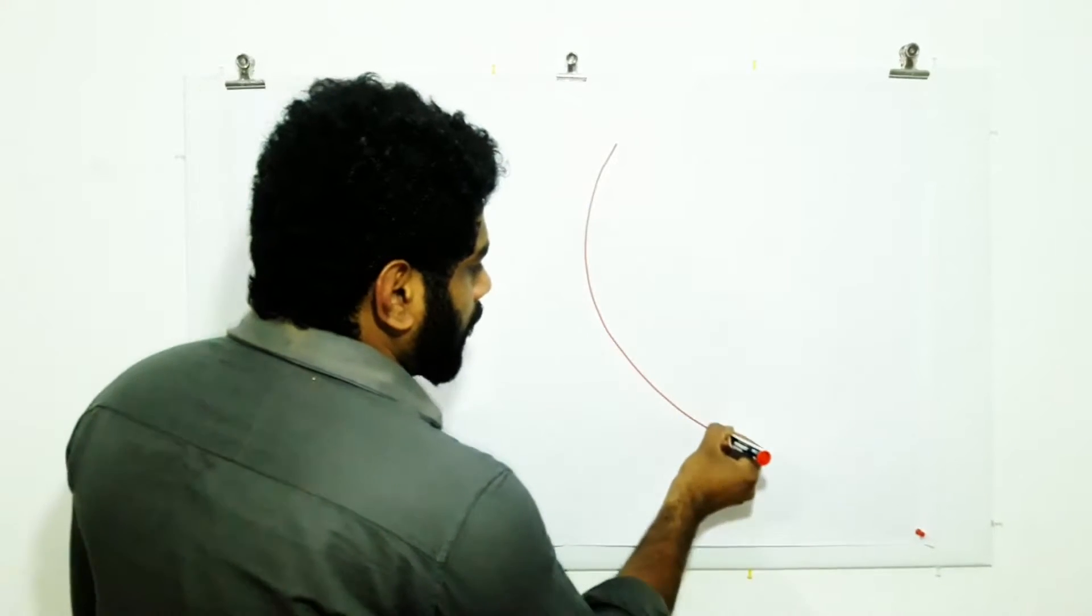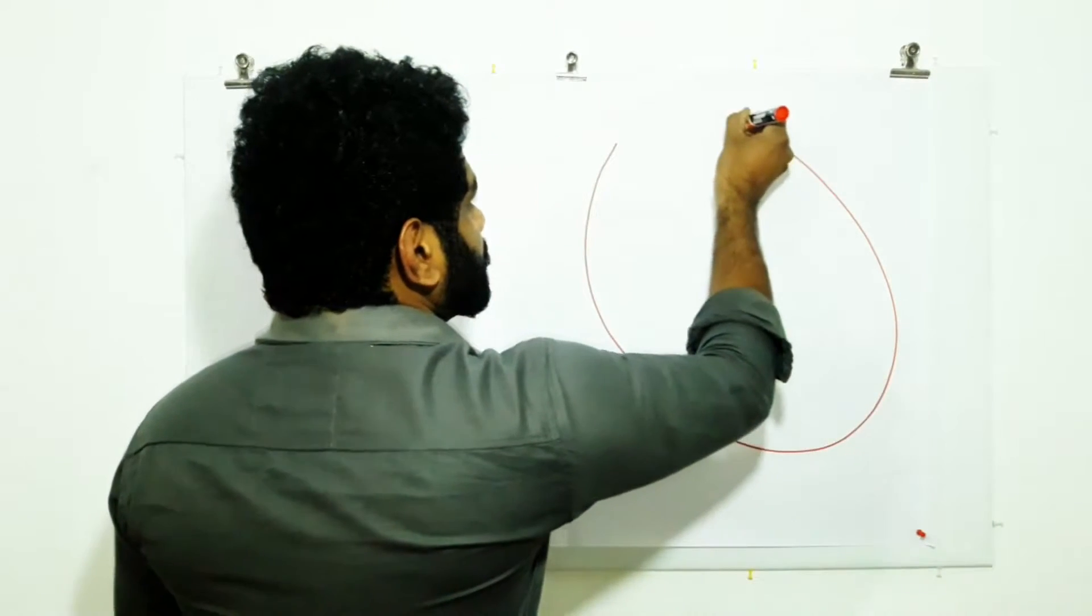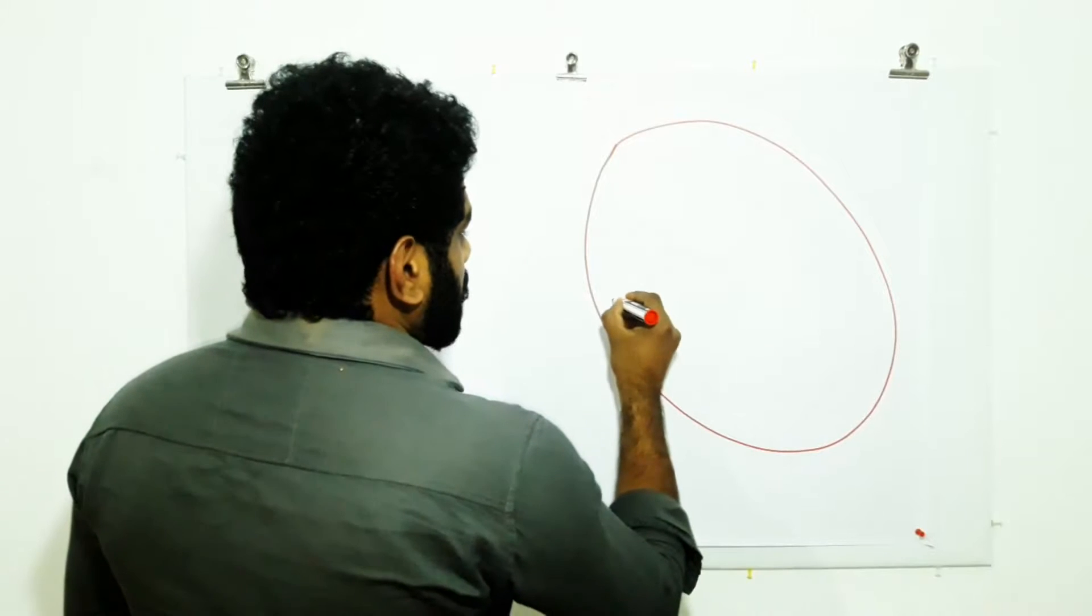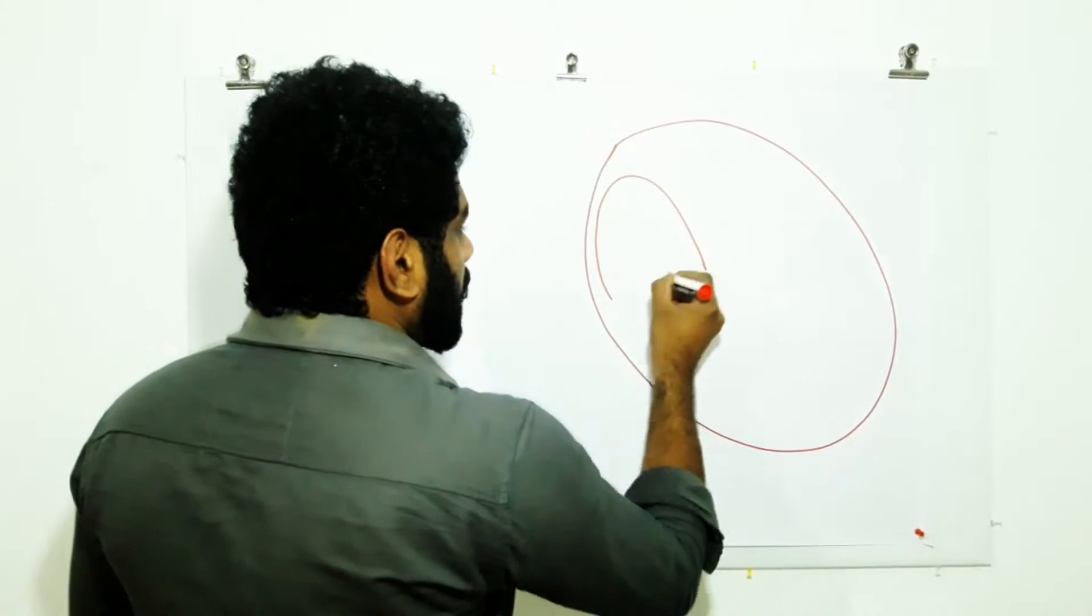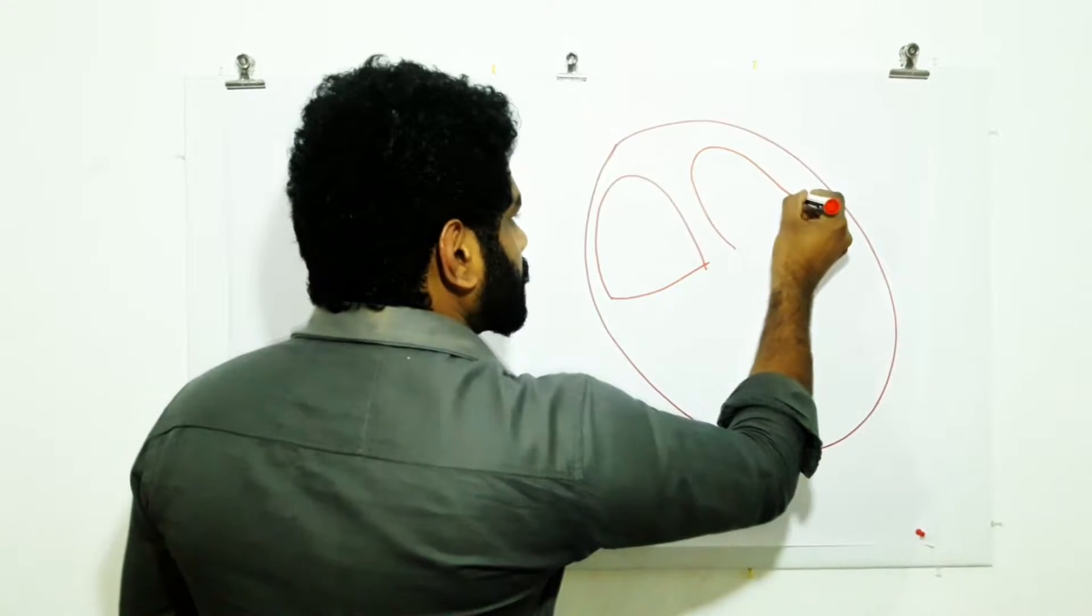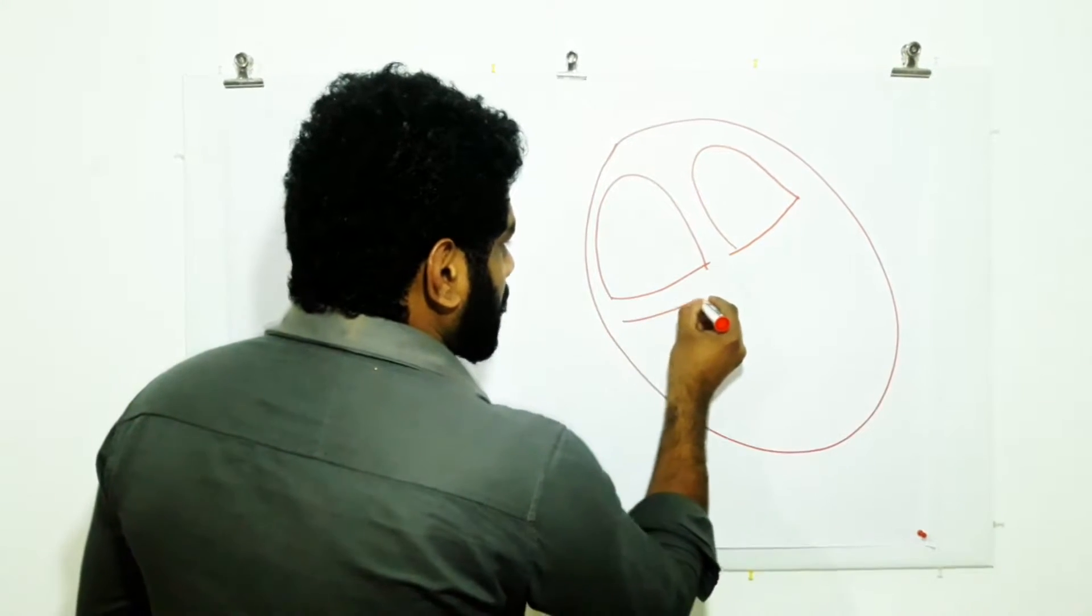Here we have our heart, our two atria and two ventricles.